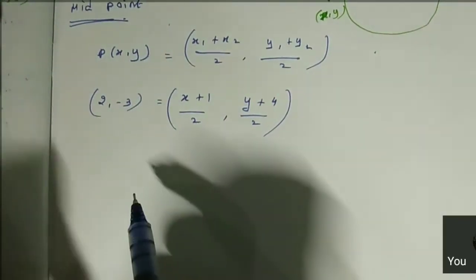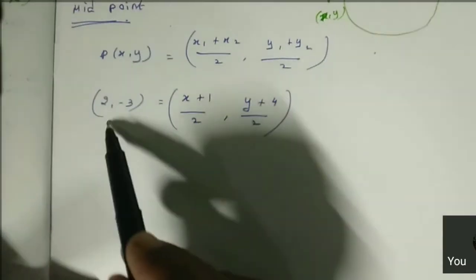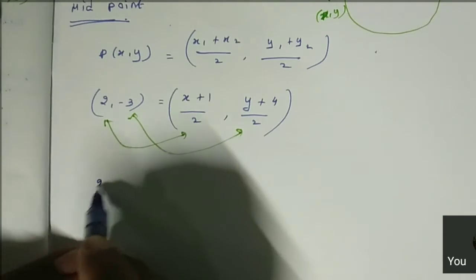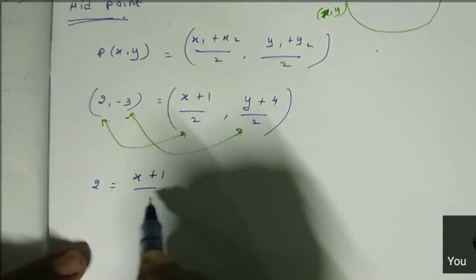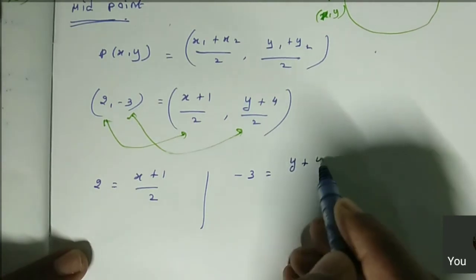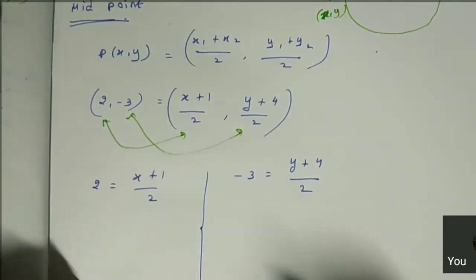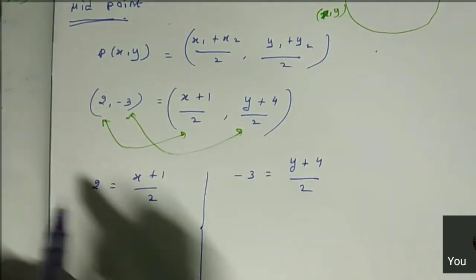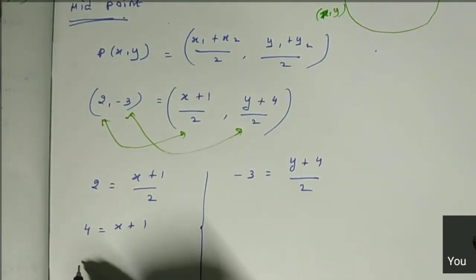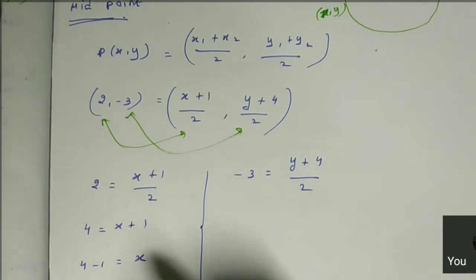Next, we can equate the coordinates, x and y coordinates. So 2 equals (x + 1)/2. Cross multiplication: 2 times 2 is 4 equals x + 1, then 4 - 1 equals x, then x equals 3.